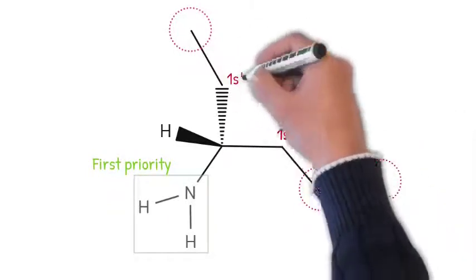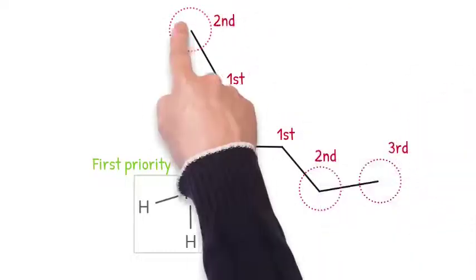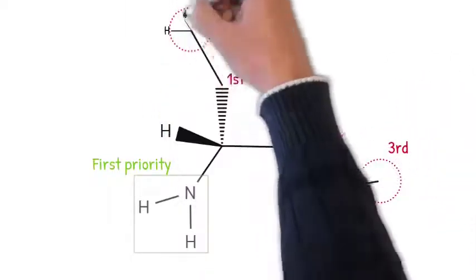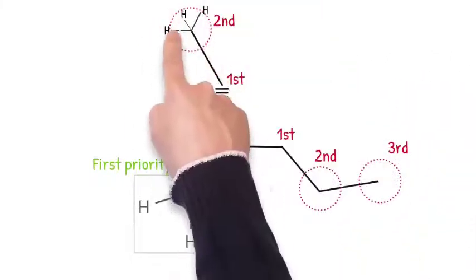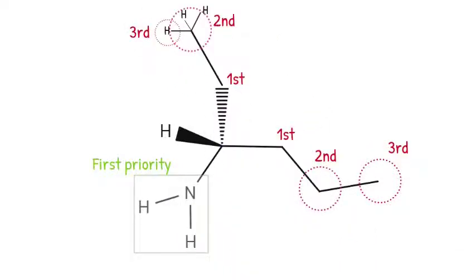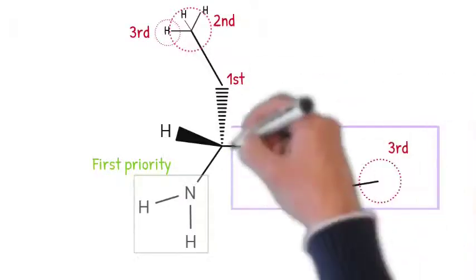In this case, though the ethyl and propyl groups have the same first and second atoms, they do differ at atom number three. The third atoms of ethyl are three hydrogen, while propyl is bound to a carbon. Since carbon is a higher priority than hydrogen, we assign a higher priority to the propyl group than the ethyl group.